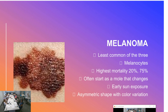Melanoma is the one we all fear most. Fortunately, it's the least common of the three. It starts in the melanocytes, which create melanin — the pigment of our skin — and it has by far the highest mortality, about 20% of all melanomas lead to death, accounting for 75% of all skin cancer deaths. It often starts as a mole you've had for years that suddenly begins changing — rapidly getting bigger, with an irregular border, or non-uniform pigmentation with darker and lighter parts. It can also appear spontaneously without an underlying mole. Like basal cell, it's linked to early sun exposure and sunburns. Key warning signs are asymmetric shape and color variation.